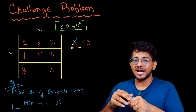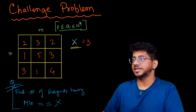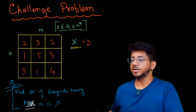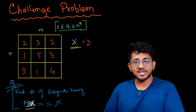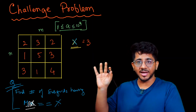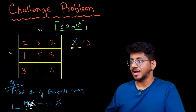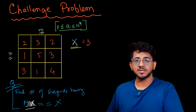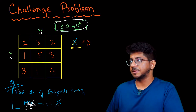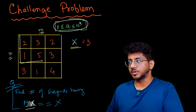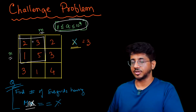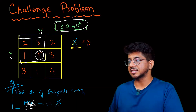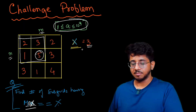Find the number of subgrids having maximum equal to x — exactly equal to x. You are given a grid of N cross M, and you have to find the number of subgrids whose maximum equals x. Numbers can be up to 10^9. For example, think about this particular grid — the maximum is 5, which is not equal to x, so it would not be counted.